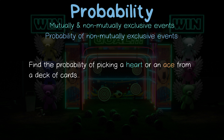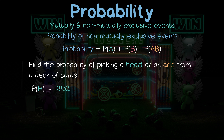Now let's consider non-mutually exclusive events. Let's think about pulling a heart or an ace from a deck of cards. Since a card can be both a heart and an ace, these events are non-mutually exclusive. The probability of pulling a heart out of a deck is going to be 13 over 52, because there are 13 of each suit. The probability of pulling an ace is 4 over 52. However, there's also the chance that we could pull the ace of hearts, which has a probability of 1 over 52.